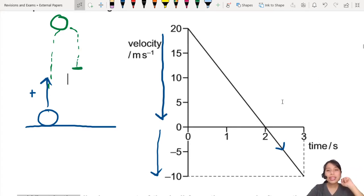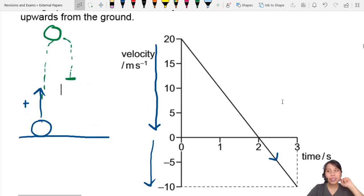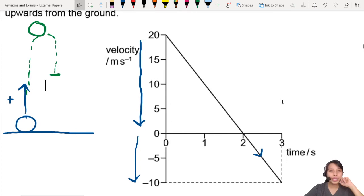So the question is, what is the displacement from the ground after three seconds? So after three seconds, you will need to find what is this height? Let's do some problem solving here. Now, when you see velocity-time graph,